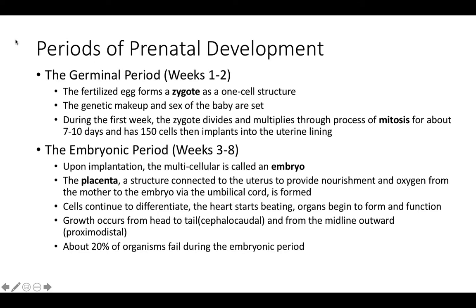With prenatal development, let's look at the periods. The germinal period covers the first couple of weeks, where the fertilized egg forms a zygote as a one-cell structure. The genetic makeup and sex of the baby are set. During the first week, the zygote divides and multiplies through a process of mitosis, happening for about seven to ten days and producing about 150 cells that implant into the uterine lining.